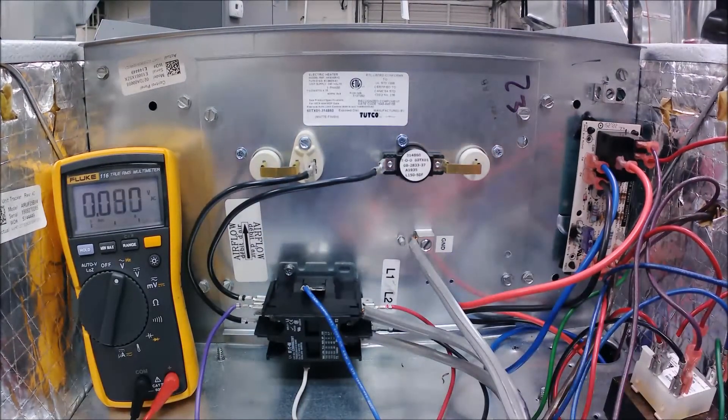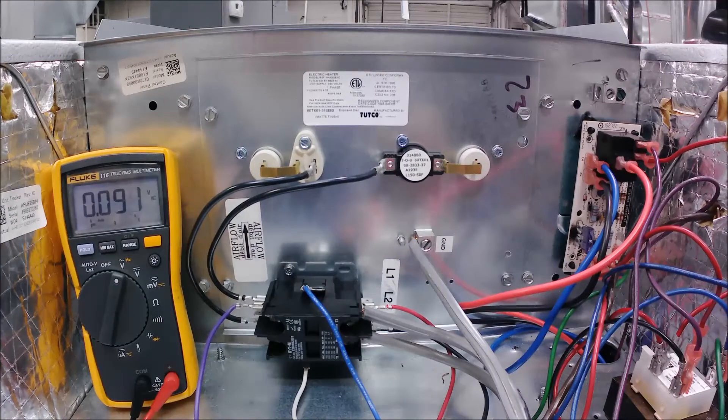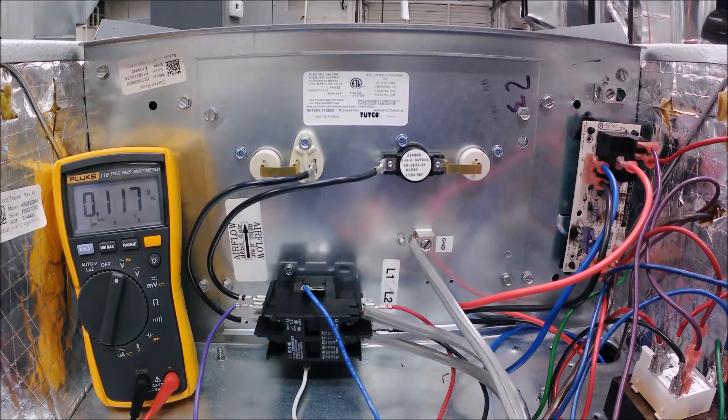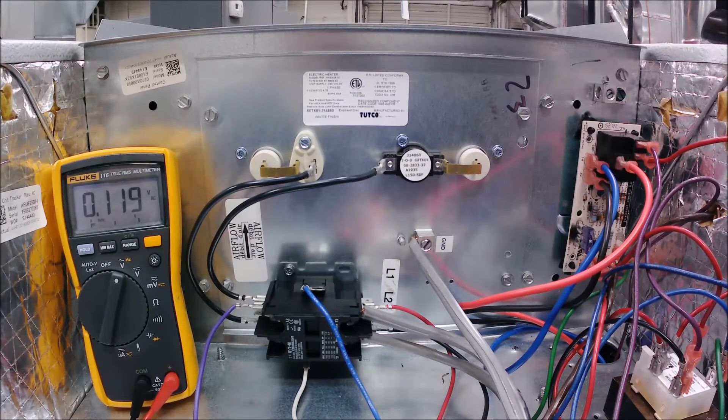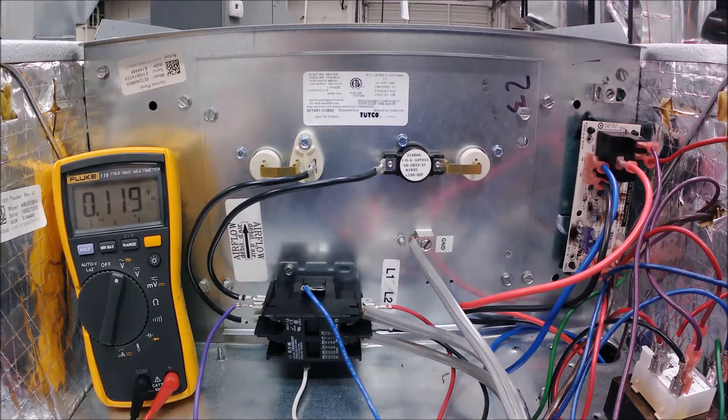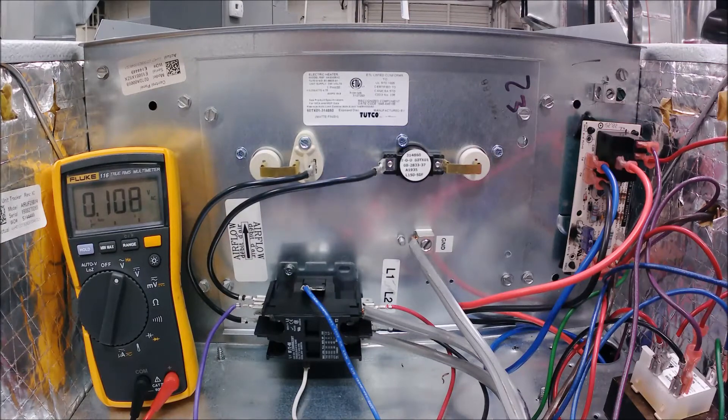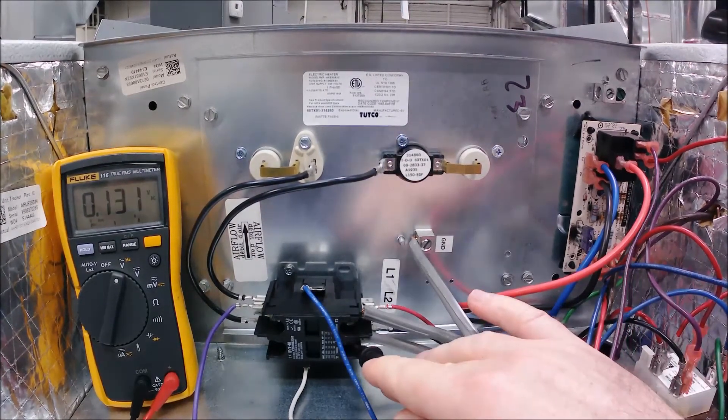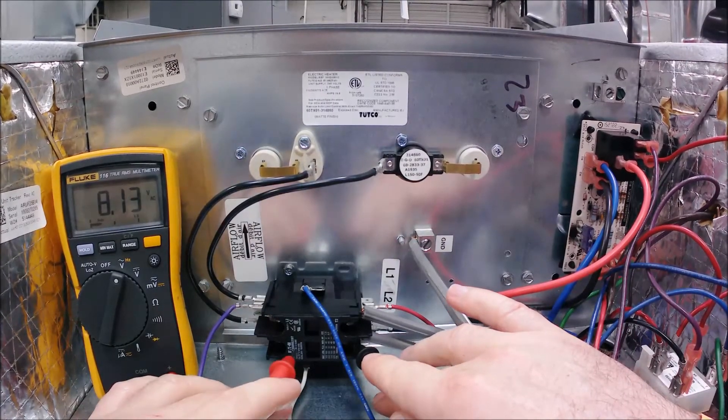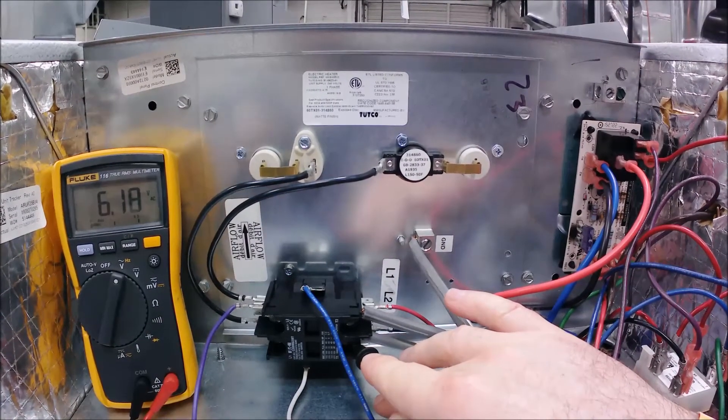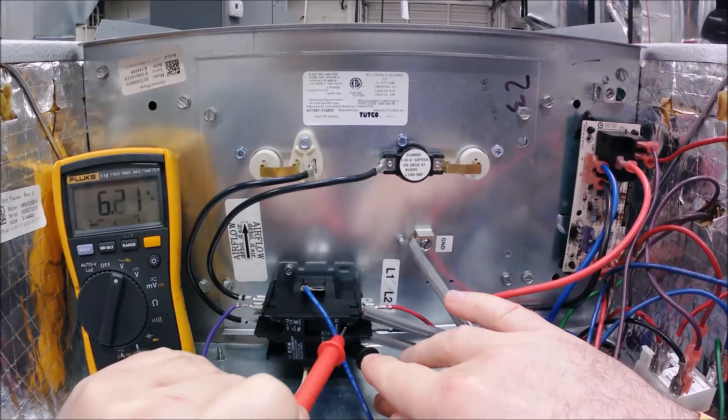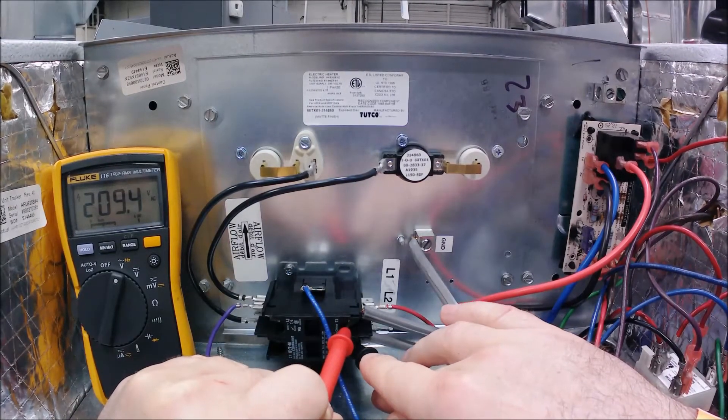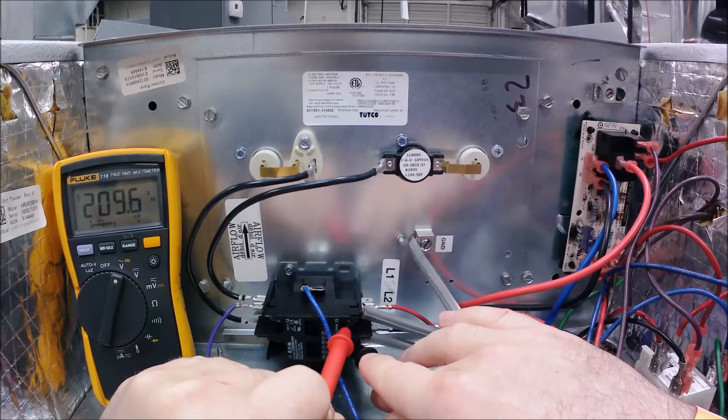So hopscotch troubleshooting is very simple. We're going to leave one lead stationary and we're going to move the other one. What I'm going to do is with my right hand, I'm going to come down here on the terminal labeled L2 - this is the underside of the contactor. Now I just did a voltage check here and you can see that I've got 209.6, 209.7, what have you.